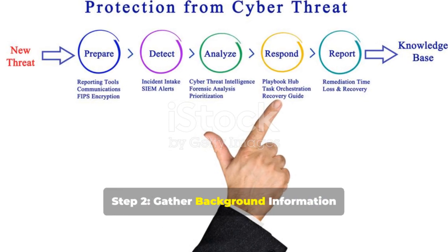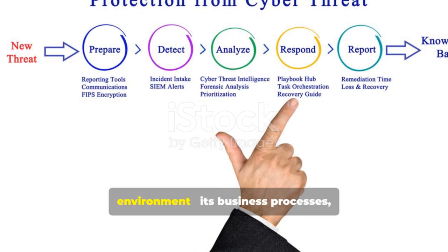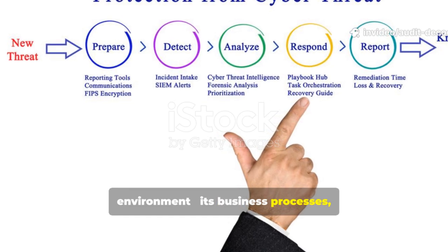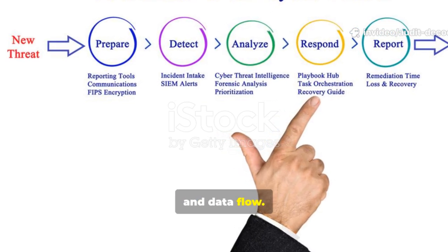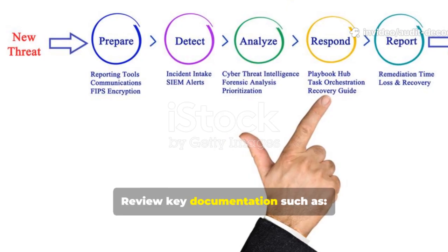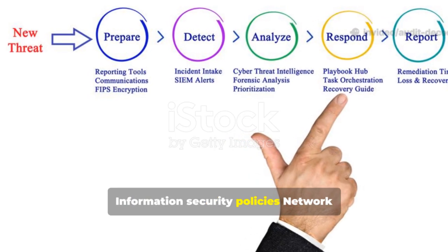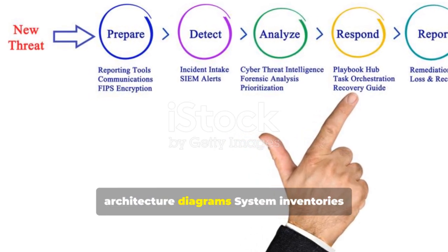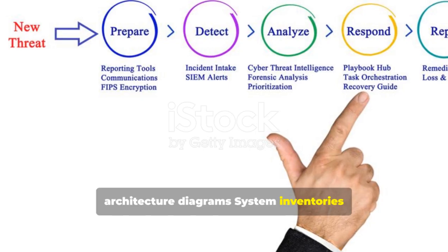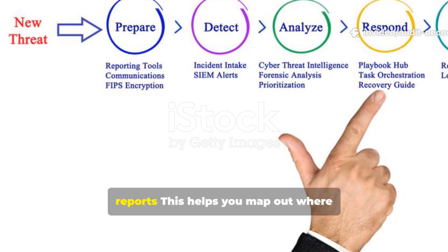Step 2: Gather background information. Understand the organization's environment, its business processes, IT infrastructure, and data flow. Review key documentation such as information security policies, network architecture diagrams, system inventories, access control matrices, and risk assessment reports.